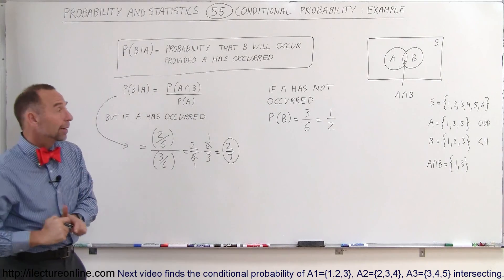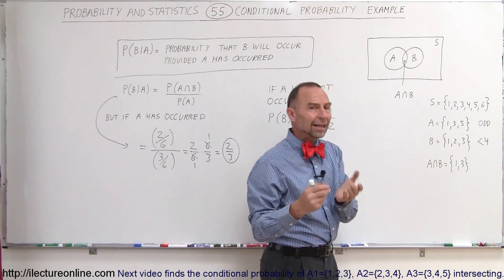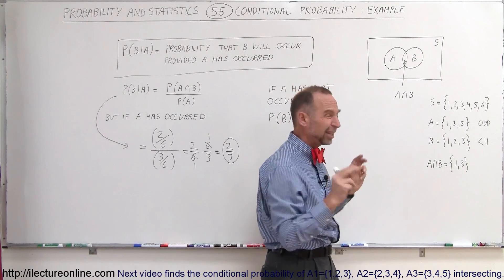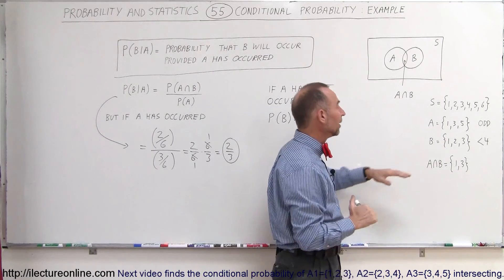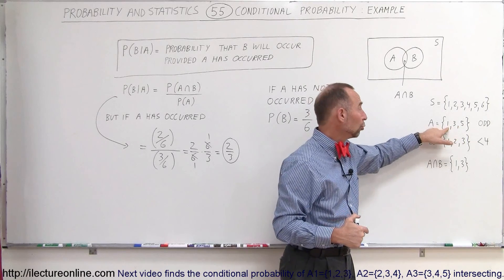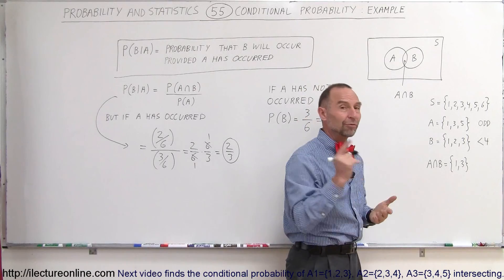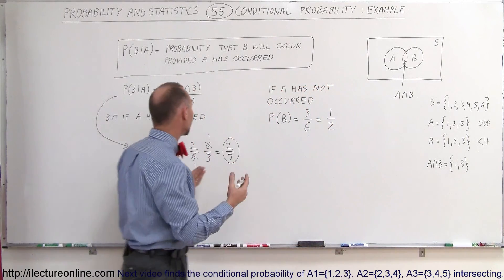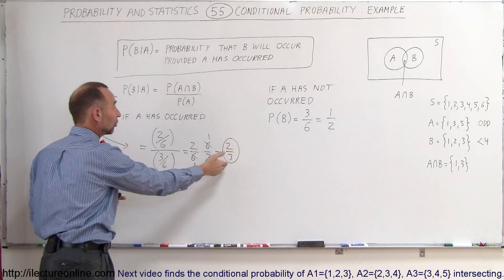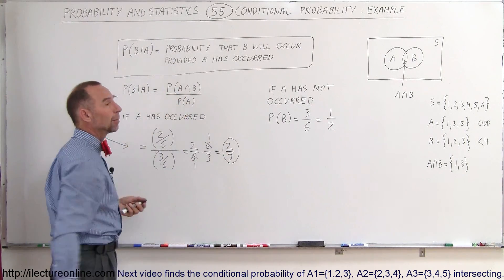And it makes sense when you think about it. There are three possible outcomes for A: 1, 3, and 5. If you know that A has happened, you either threw a 1, a 3, or a 5 — those are the three numbers in the new reduced sample space. Then you can ask: what's the probability of throwing something less than 4? Out of the three possible numbers, two of them are less than 4. So there's a 2 out of 3 probability that B will occur provided A has occurred. Therefore, the probability that B will occur provided A has occurred equals 2/3, which equals the probability of the intersection of A and B divided by the probability of A.